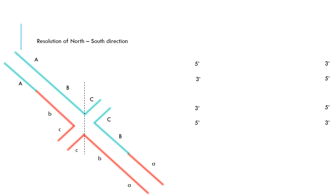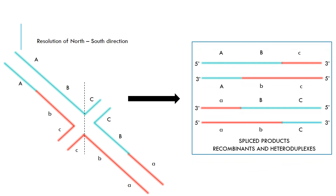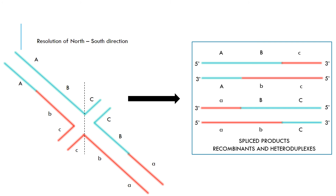If resolved in the north to south direction, we will get splice products with crossing over and recombinants. This is where we see crossing over of the dominant genes and the recessive genes.